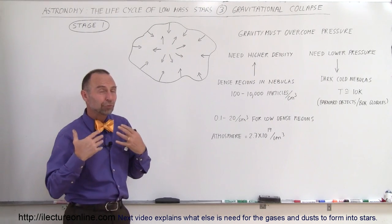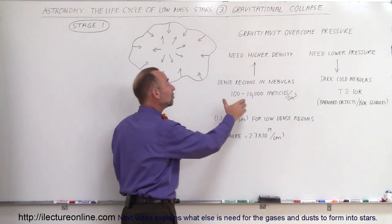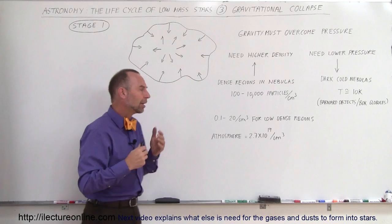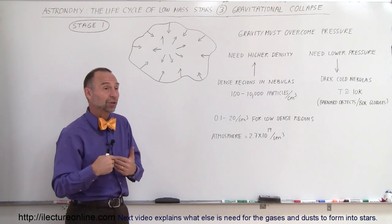In order to be able to form a star, you need more dense regions that have as many as 100 to 10,000 particles per cubic centimeter. Well, how does that compare, for example, to our atmosphere?